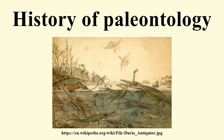The first half of the 19th century saw geological and paleontological activity become increasingly well organized with the growth of geologic societies and museums and an increasing number of professional geologists and fossil specialists. This contributed to a rapid increase in knowledge about the history of life on Earth, and progress towards definition of the geologic time scale largely based on fossil evidence. As knowledge of life's history continued to improve, it became increasingly obvious that there had been some kind of successive order to the development of life.